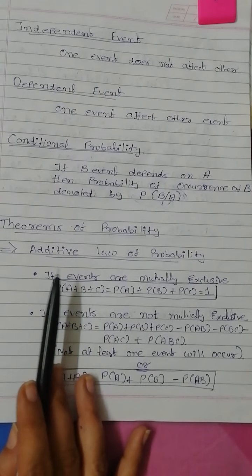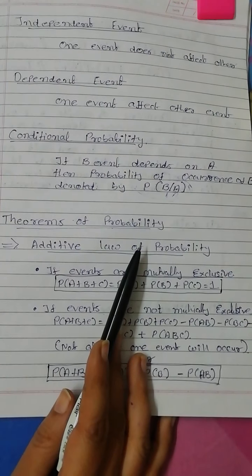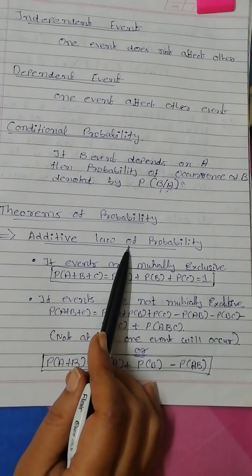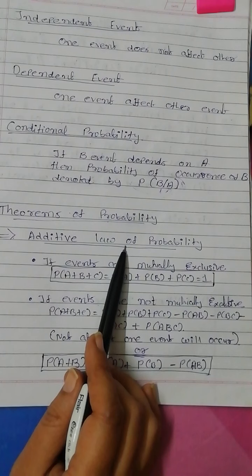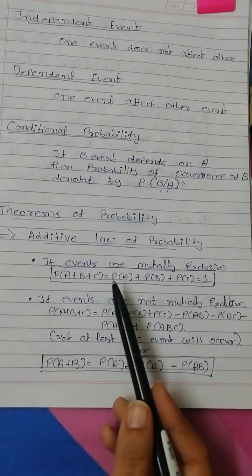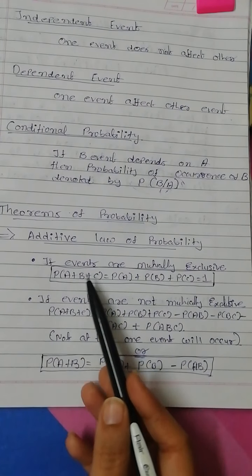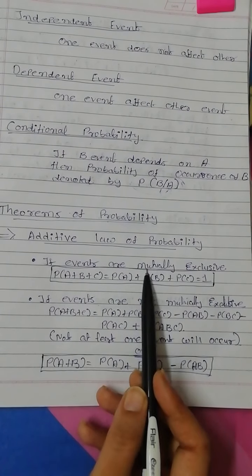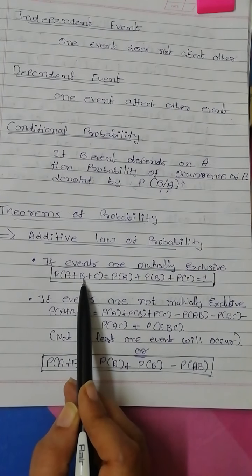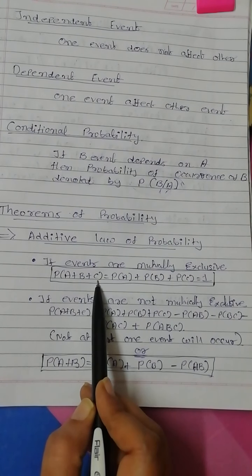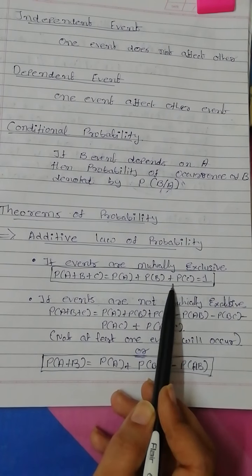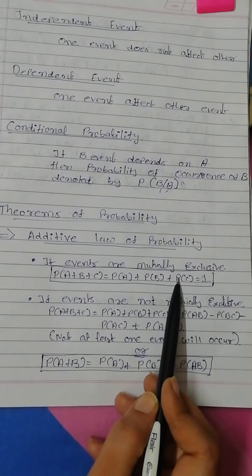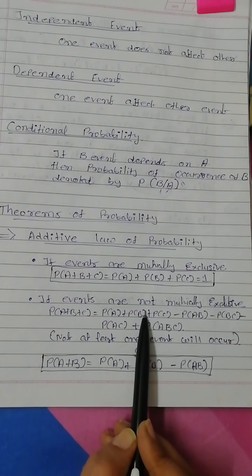Next we have the theorems of probability. There are two theorems we are going to learn. The first is the additive law of probability, also known as the addition law of probability. We have two cases: if the events are mutually exclusive, the law is P(A) + P(B) + P(C), and the sum of all mutually exclusive events always equals 1.